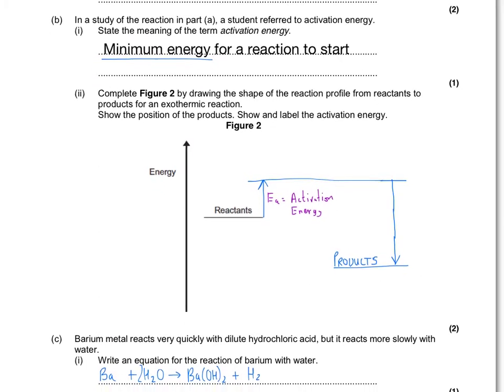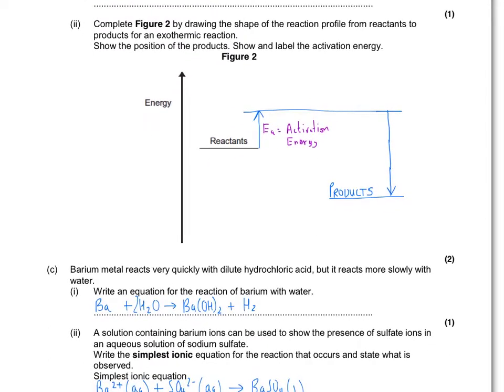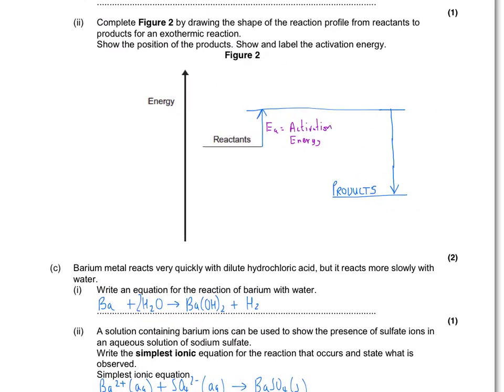The next question we're asked about the reaction profile diagram for an exothermic reaction. With an exothermic reaction, the reactant's position is above the products. So this is the activation energy. That's the bonds being broken. This is the bonds being made. And not required, that there is the delta H. One mark for activation energy, one mark for the products.